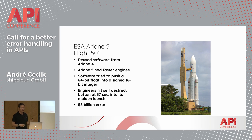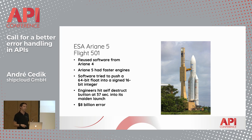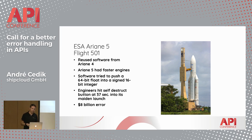In this case, NASA reused software from previous Ariane rockets that was based on different data types. The software tried to push a 64-bit float into a 16-bit integer, resulting in a conversion failure and submitting a failure diagnostics code as an input to the inertial reference system.